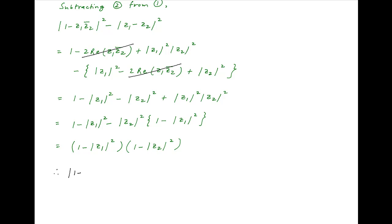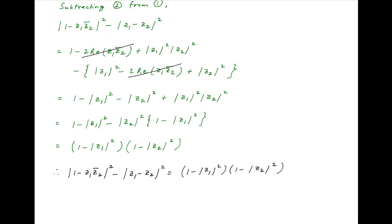Therefore, to summarize, we have the result: the absolute value of 1 minus z1 times the conjugate of z2, squared, minus the absolute value of z1 minus z2, squared, is equal to 1 minus the absolute value of z1 squared, times 1 minus the absolute value of z2 squared.